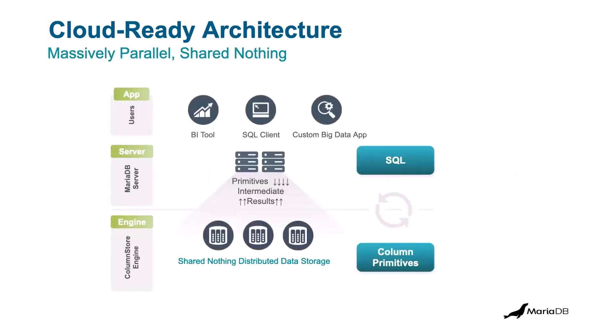This is the architecture — basically how it works. At the top layer you have the clients, like the Power BI tools I'm going to demonstrate later, your SQL clients, and maybe some custom big data applications. Those applications talk directly to the MariaDB server, which will translate that information into the ColumnStore structure and language. It communicates through the primitive store and intermediate results between the back-end storage engine and the front-end server, and they work in harmony as though they're one unit. The storage engine is a completely separate layer than the server itself.